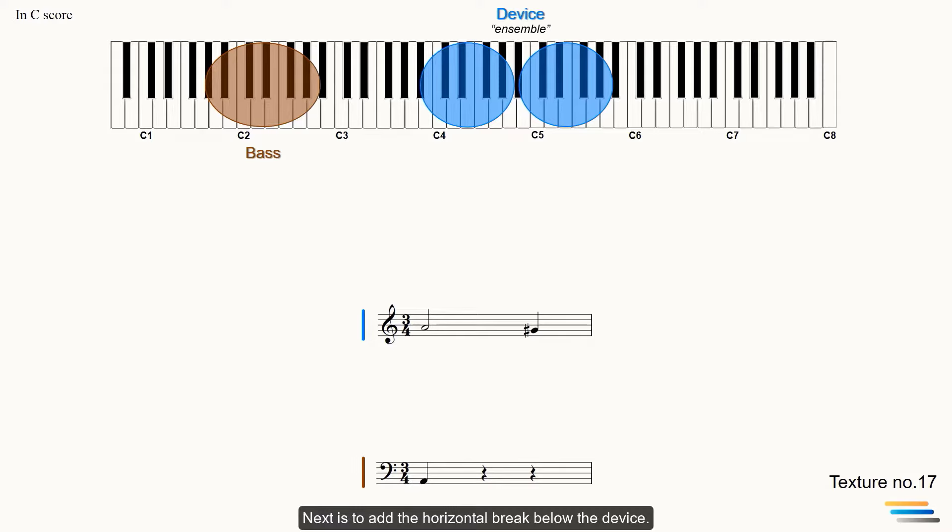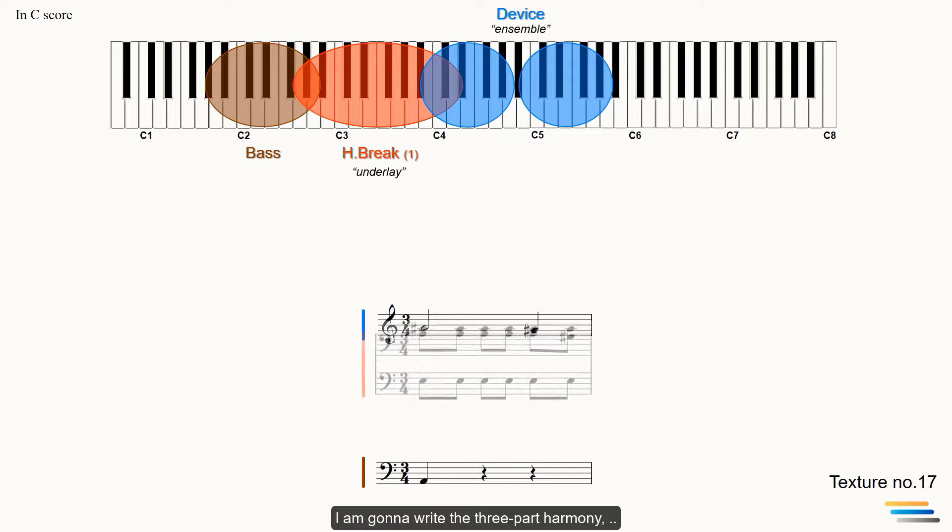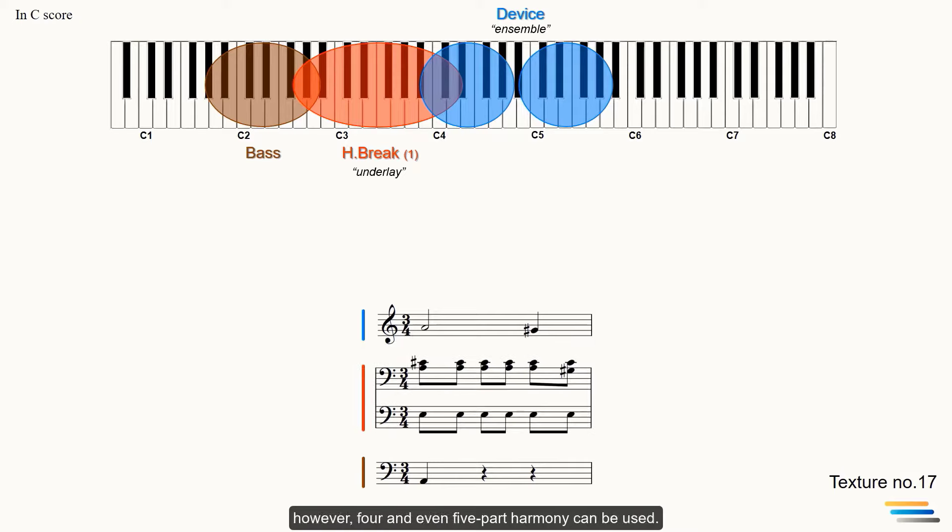Next is to add the horizontal break below the device. I'm going to write the three-part harmony. However, four and even five-part harmony can be used. This horizontal broken chord can be shaped between the woodwinds, strings or brass, depending on your choice. My decision is the brass section.